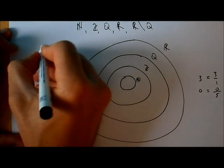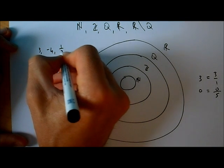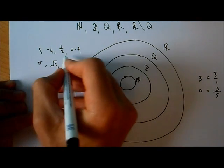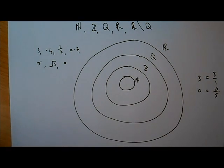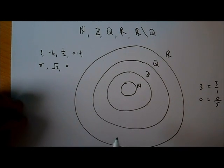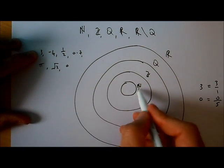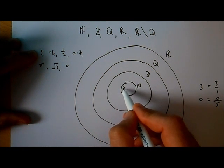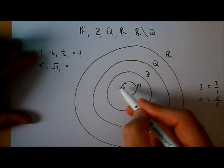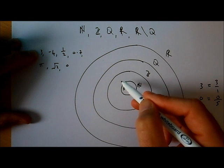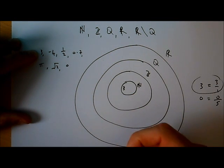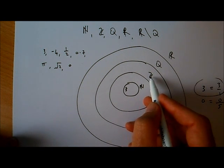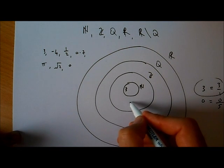Let's have a look. If I write down these numbers — 3, minus 4, one half, 0.7, pi, the square root of 2, and 0 — where would those numbers go in the set? We always work from the inside out. Let's look at the number 3: is 3 a natural number? Yes, it is. So 3 is going to go in the natural number section. It's also in the integer set, the rational number set, and the real number set. What about minus 4? Is it a natural number? No. Is it an integer? Yes, it is. So minus 4 is going to go in the integer section.